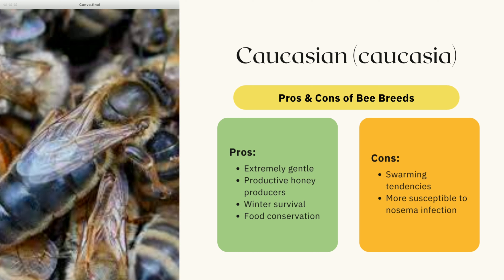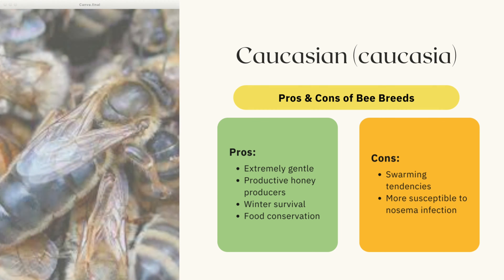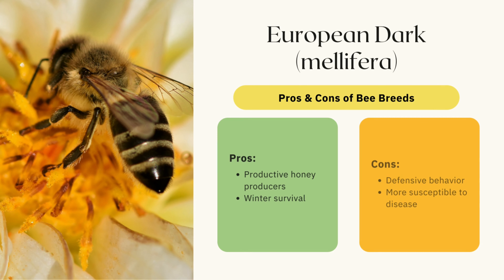Then there's the Caucasian bee, which bluntly is not the most popular bee, primarily due to their susceptibility to infections. They also have colonies that reach their full strength midsummer, which can be an undesirable trait for areas that have high spring nectar flows. They are extremely gentle, great honey producers, and have strong winter survival.